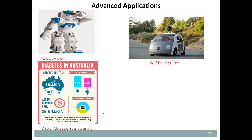Visual question answering is a latest application of text detection and recognition — the advanced version of OCR. For example, given an image showing statistics, if asked 'What percentage of women are suffering from diabetes in Australia?', a human can visually extract the text and answer '3.6%'. Similarly, a robot must detect the text, extract it, and provide the answer. This really works as a practical system.